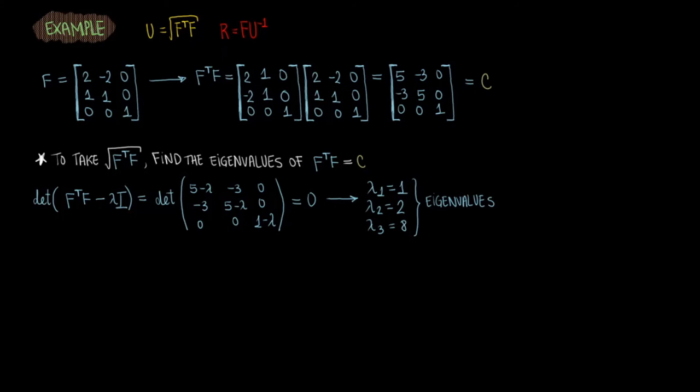We can use the eigenvalues of C to construct a tensor called C tilde, where the eigenvalues are placed on the diagonal. C tilde can be used to find U tilde, which will help us find U later on.